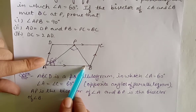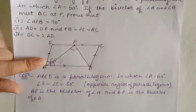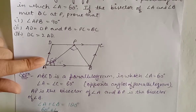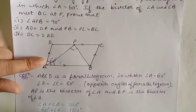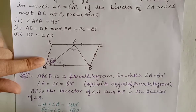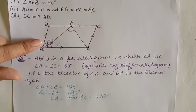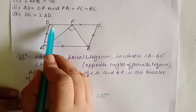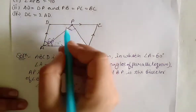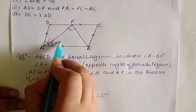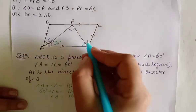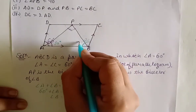Now you need to find angle B. For angle B, adjacent angles sum to 180 degrees. Angle A is 60, so angle B equals 180 minus 60, which means angle B is 120 degrees. BP is the bisector of angle B, so angle PBA equals 60 degrees. This complete angle is 120 degrees, so the bisected angle is 60 degrees.